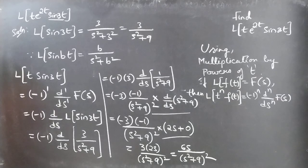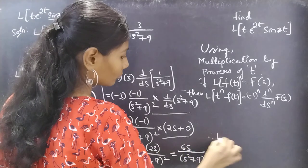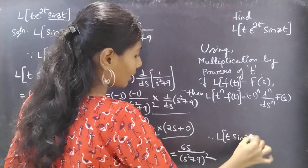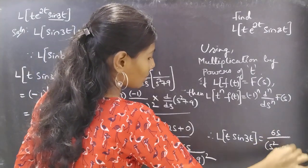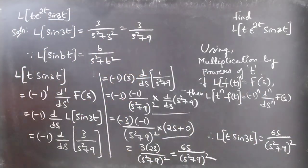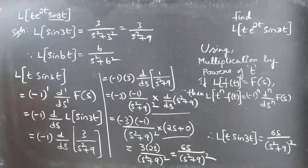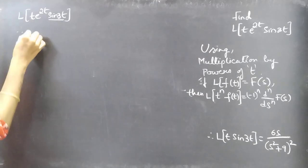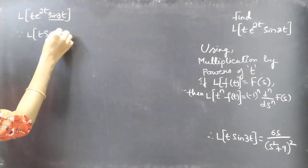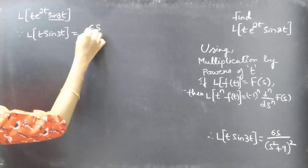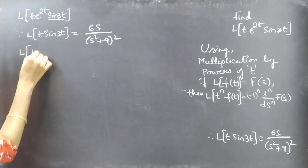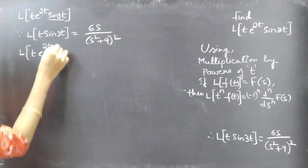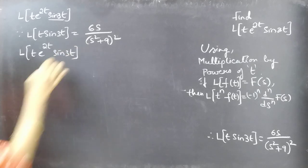Therefore, L{t·sin(3t)} = 6s/(s² + 9)². Now coming to the actual problem: L{t·e^(2t)·sin(3t)}. Since we have L{t·sin(3t)} = 6s/(s² + 9)², we will now find L{t·e^(2t)·sin(3t)} using the first shifting theorem.